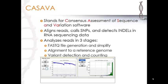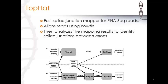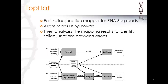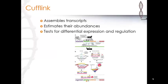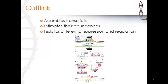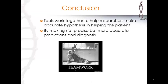TopHat's main job is alignment, and it also looks for splice junctions between the exons. Cufflinks assembles transcripts, estimates abundances, and tests for differential expressions and regulations.